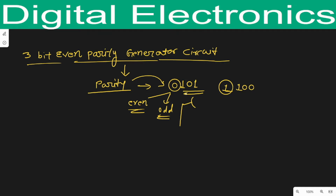By using this concept we will draw a truth table. Let me take one more example: suppose the data is triple one (111) and I want to add an even parity bit. In the case of even parity, since the number of ones is odd (three ones), the parity bit will be one. You can understand this by using this statement.